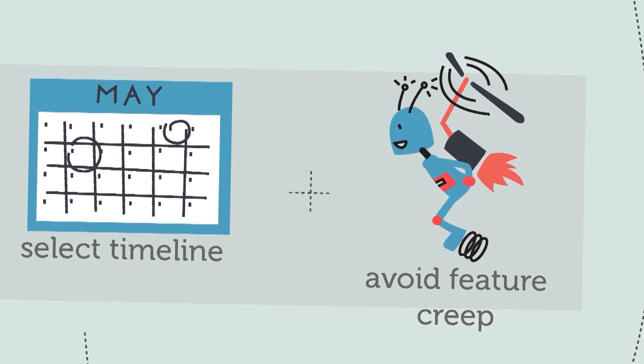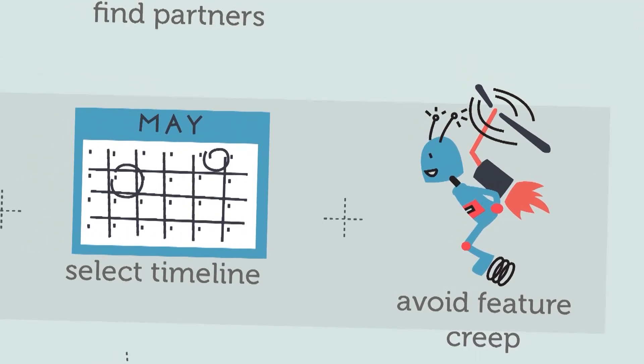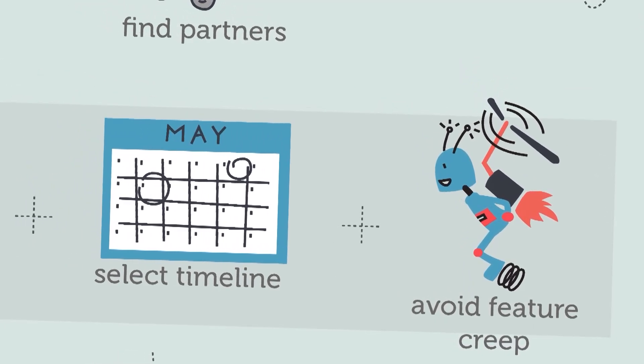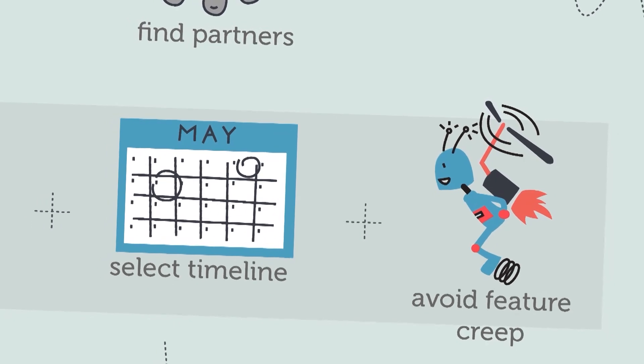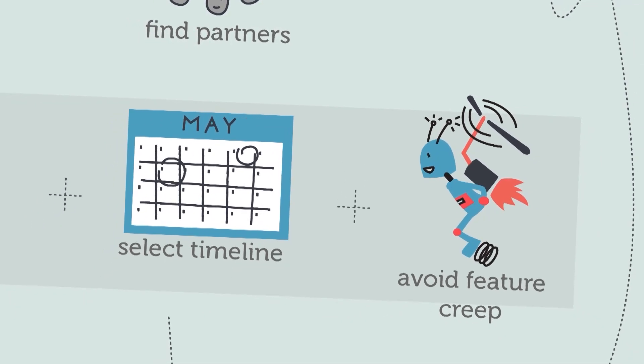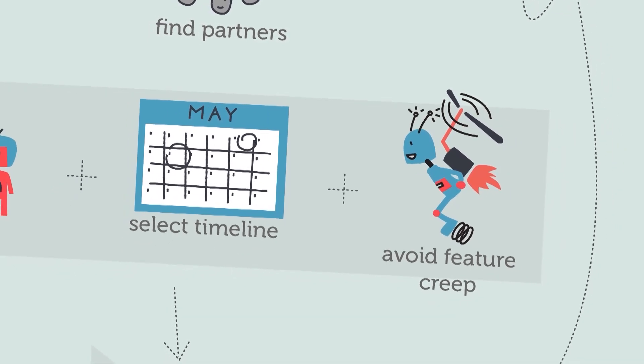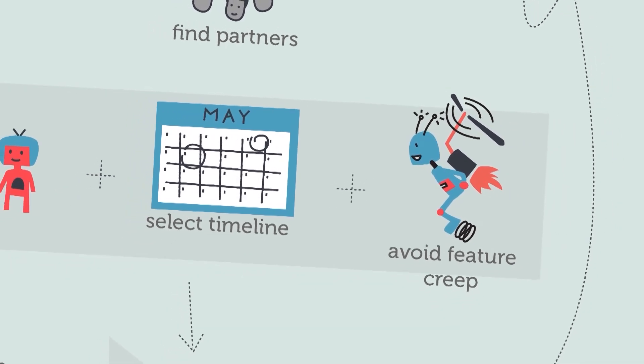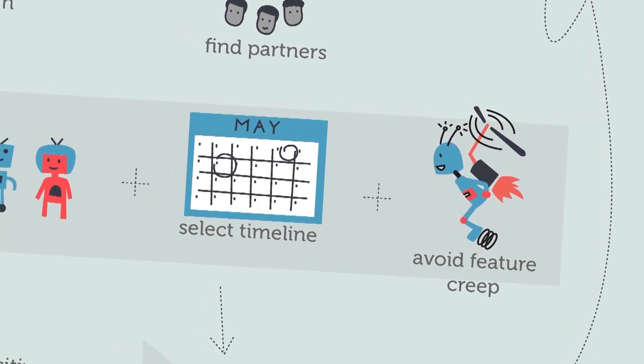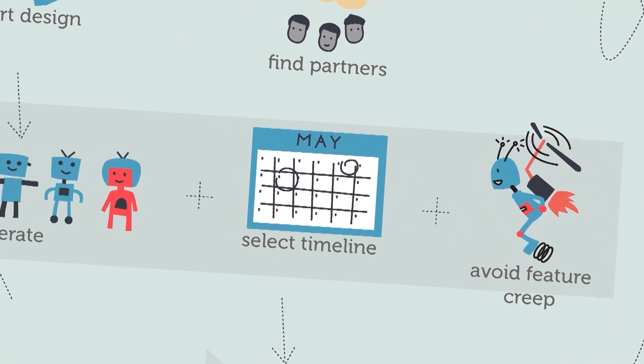Feature creep is when you keep adding more and more features because you're like, oh, this one additional thing would be really cool, and this one additional thing would be really cool. You keep adding things, but you never actually release it to anyone because you're so preoccupied with making it perfect. In reality, the first release of any product is not going to be perfect. It's never going to be perfect the first time.